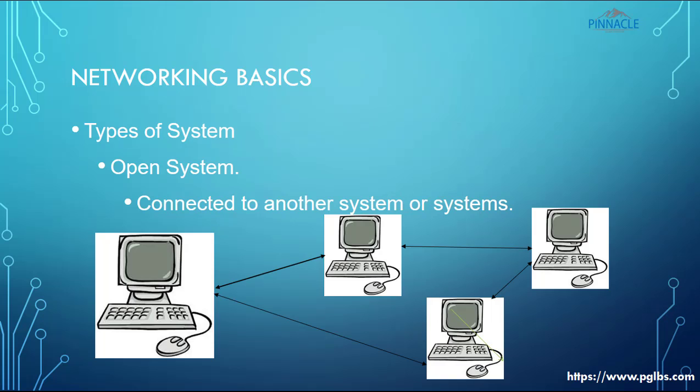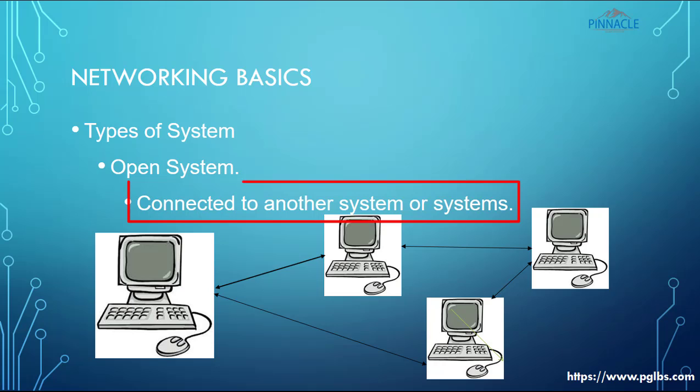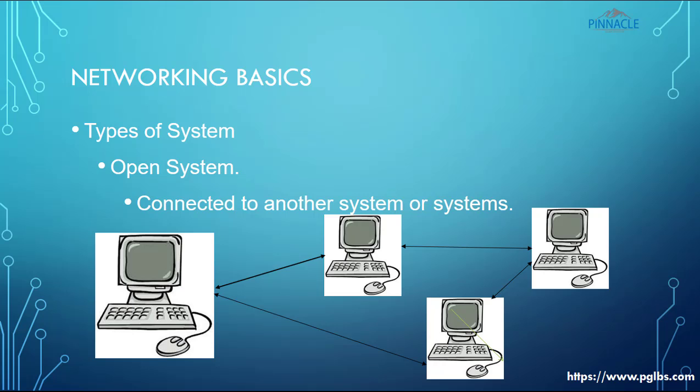Now it is important to understand the different types of systems. There are two types commonly used: an open system and a closed system. An open system is a system where two or more systems are connected together. Since we are talking about computer and communication networks, we will limit our discussion to computers and their peripherals. When two or more computers are connected together it becomes an open system. The basic necessity for connecting them is to exchange information or share data.